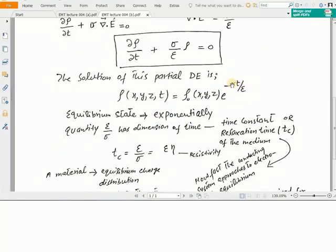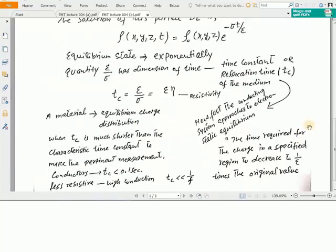And the quantity in the exponential part, epsilon over sigma, has the dimension of time. This is known as the time constant or the relaxation time Tc of the medium. This time constant describes how fast a system can approach its equilibrium value. It can be defined as the time required for the charge in a specified region to decrease to 1 over e times the original value.